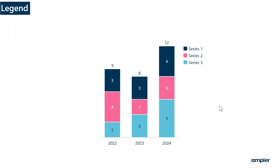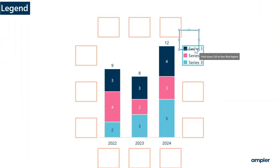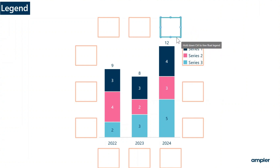If you want to change the position of the legend, select the outer frame of the legend and drag to one of the anchor points on the outside of the chart.